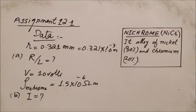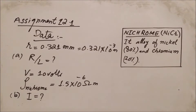In Assignment 12.1, the radius of the wire is given as 0.321 mm and it is asked to find the resistance per unit length. In the next section, a potential of 10 volts is applied to that wire. The wire is made up of nichrome, whose resistivity is given as 1.5×10⁻⁶ ohm·meter, and you are asked to find the value for the current.